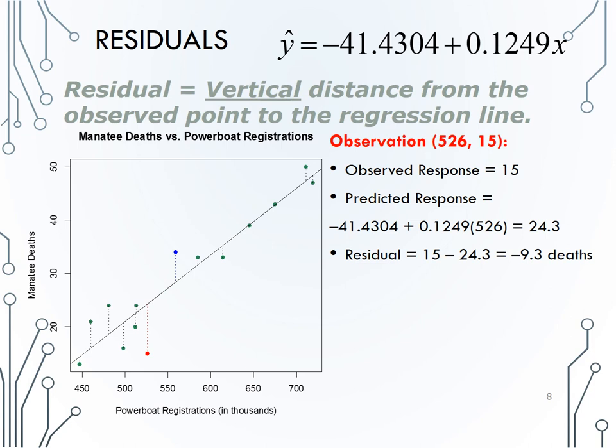I can calculate the predicted response by plugging 526 into my regression equation, and then find the residual by taking the observed value, 15, minus the predicted value, 24.3, and I get negative 9.3 deaths. Remember, the residual is a vertical distance, so the unit of the residual is the same as the unit in y. Also note that the residual is negative. This is because the observed value is below the regression line.